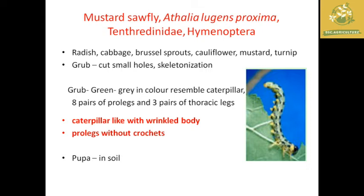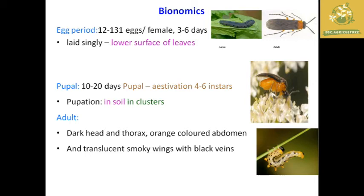In the biology of mustard sawfly: the female lays 12 to 131 eggs singly on the lower surface of the leaves, with an egg period of 3 to 6 days. The pupal stage lasts four to six instars and pupation occurs in clusters in the soil. The adult has a dark head and thorax, an orange-colored abdomen, and translucent smoky wings with black veins.